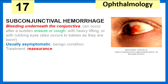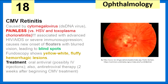Subconjunctival hemorrhage — bleeding underneath the conjunctiva — is usually asymptomatic and benign; treatment is reassurance because it goes away on its own. CMV retinitis is caused by CMV, a double-stranded DNA virus. It's painless — 'CMV stands for see I'm fine because it's painless.' It's associated with advanced HIV-AIDS or severe immunosuppression. Patients describe floaters with blurry vision leading to blind spots, either peripheral or central. Fundoscopy shows yellow-white fluffy hemorrhagic lesions. We treat with oral antivirals, possibly IV injections, and antiretroviral therapy.